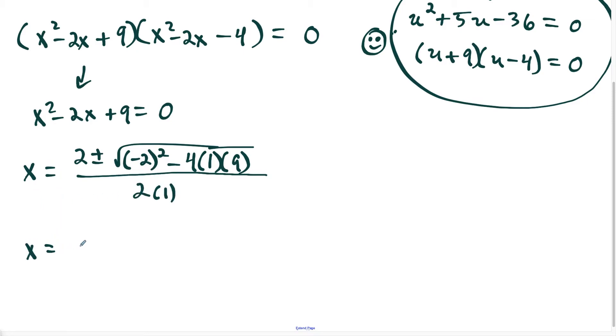So now here, all we have to do is simplify. We have 2 plus or minus, and this is going to give us 4 minus 36, and 4 minus 36 is negative 32. So right away, I could see that first equation is going to give us imaginary roots.